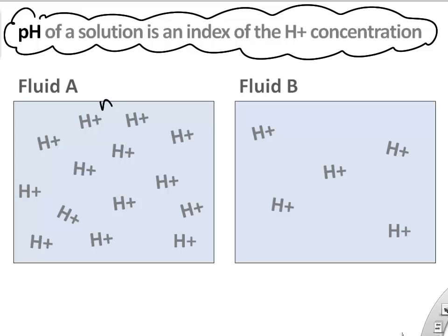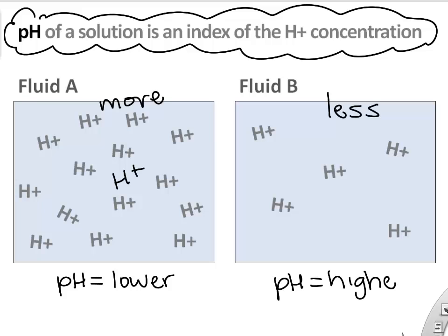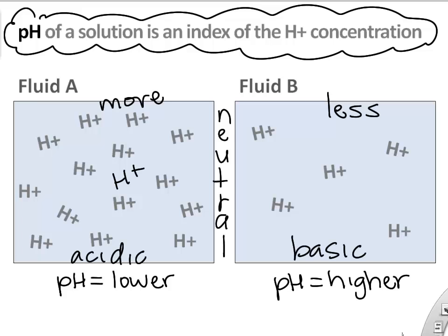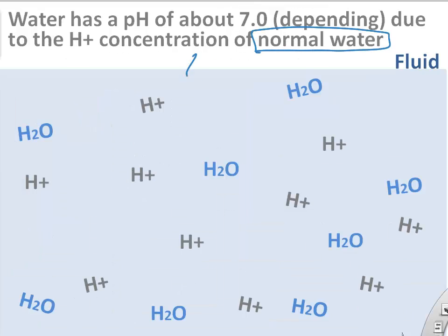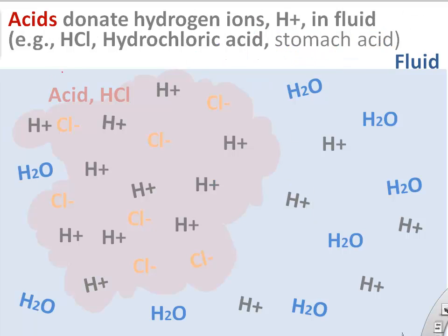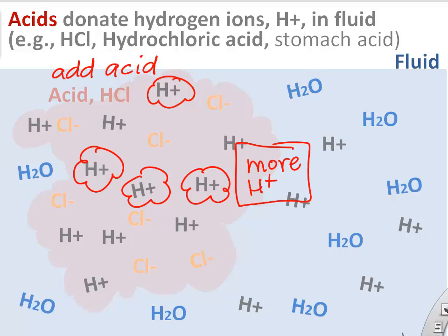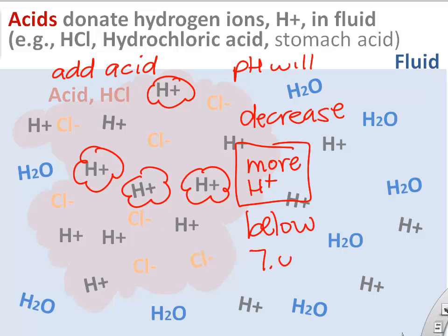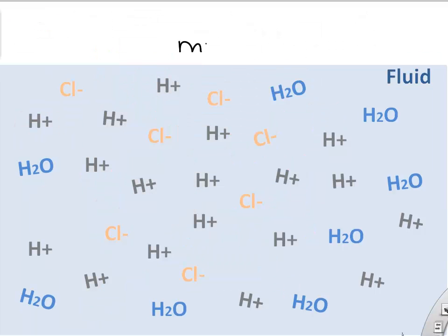More hydrogens equals a lower pH, which is more acidic. Less hydrogens equals a higher pH value, which is more basic. Normal tap water has a pH of about 7 — that's neutral. If you add more hydrogen ions to 7.0 pH water — if you add acid — there are more hydrogen ions, and you must have lowered the pH below 7. An acid is really just a chemical that likes to donate hydrogen ions.